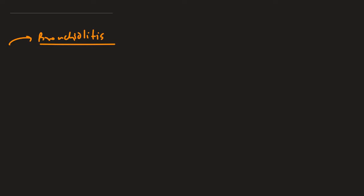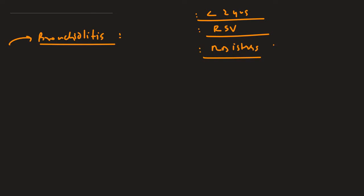Bronchiolitis is also a very important Step 2 CK topic. It occurs in children less than two years of age; you won't see it in children older than two. The causative organism is respiratory syncytial virus (RSV). The child presents with respiratory distress — nasal flaring, grunting, intercostal retractions, and low oxygen saturation.